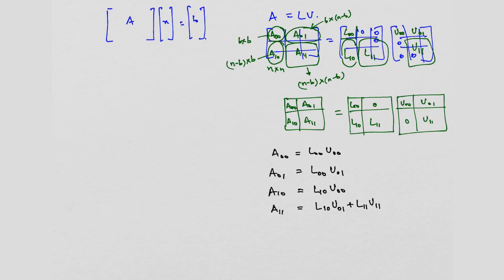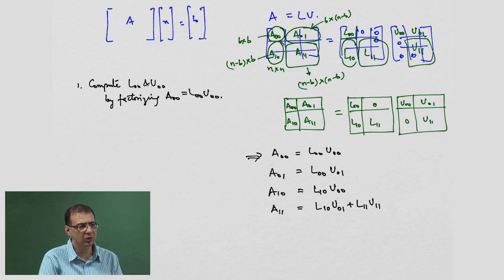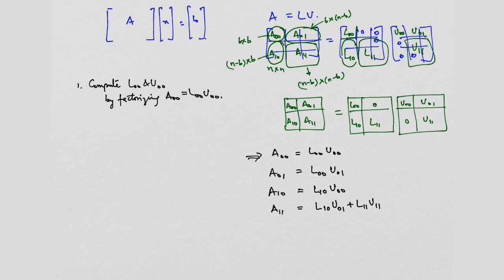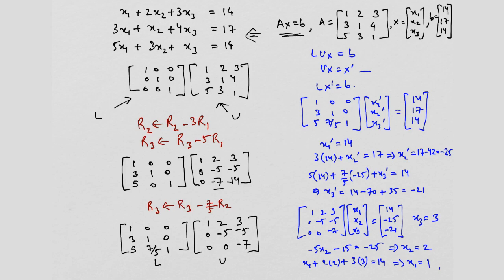Now we are going to talk about the blocked algorithm to do LU factorization. Here is how I do it. The first thing I do is compute L00 and U00 by factorizing A00 equal to L00·U00. How do I do this? I can do this sequentially. What are the exact steps? We saw that on the previous slide — how you do LU factorization. The only difference is we are not doing it for the entire matrix, just for a B-by-B block. I pick up a B-by-B block and factorize it, getting L00·U00.